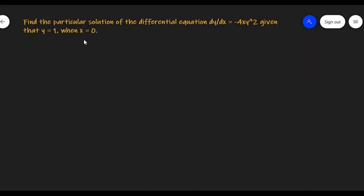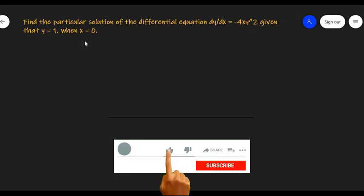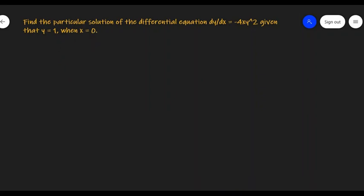We know that in the particular solution of a differential equation there are no arbitrary constants. So, we'll have to first find the general solution and then replace x and y with the given values to get the final solution. Let's start.